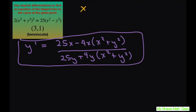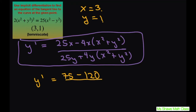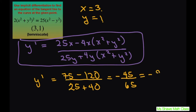We have x equals 3 and y equals 1. When you plug all this in, for the numerator you're going to get 75 minus 120, and for the denominator you're going to get 25 plus 40. So this gives you negative 45 divided by 65. You can imagine if we left those 2s in, this number would be a lot bigger. That simplifies to negative 9 thirteenths.